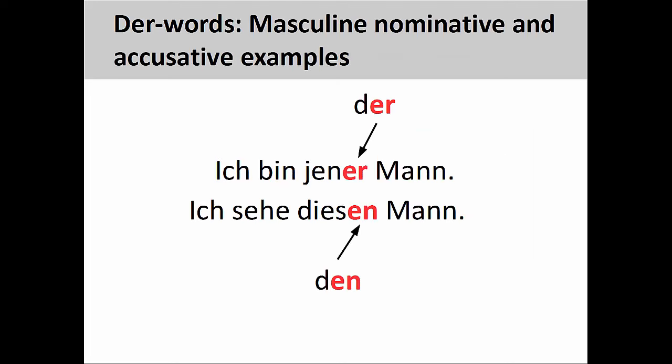Let's walk through a few examples now, starting first with the masculine forms. In the first sentence, ich bin jener Mann (I am that man), it is easy to see that the -er ending on jen resembles the masculine definite article in the nominative case. In the sentence right below, ich sehe diesen Mann (I see this man), the -en ending on dies looks like the masculine definite article in the accusative case.